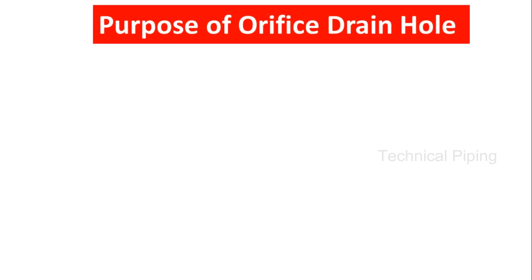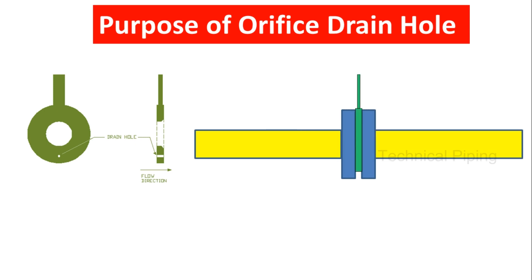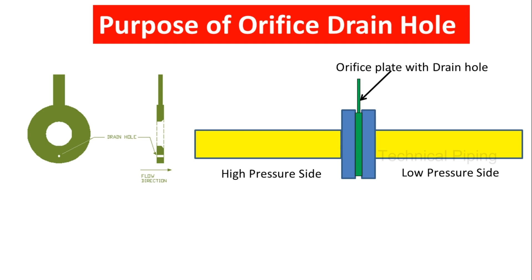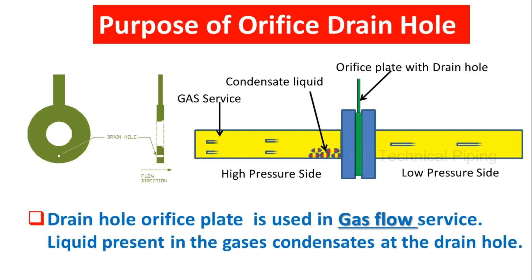Next, we know about the purpose of the orifice drain hole. The drain hole orifice plate is used in gas flow service. Liquid present in the gases condensate settles at the drain hole. The above picture view explains the purpose of the drain hole orifice plate.